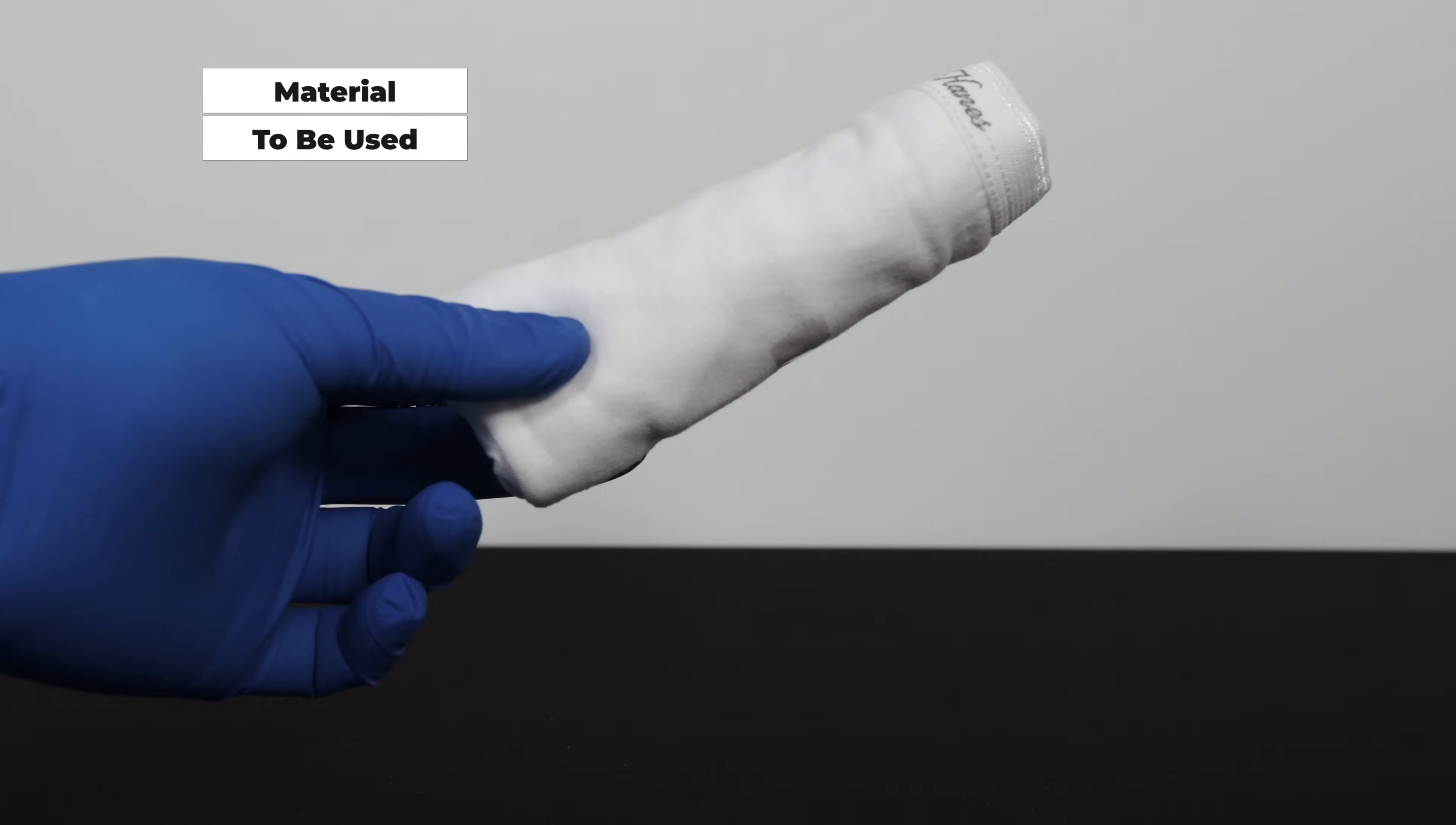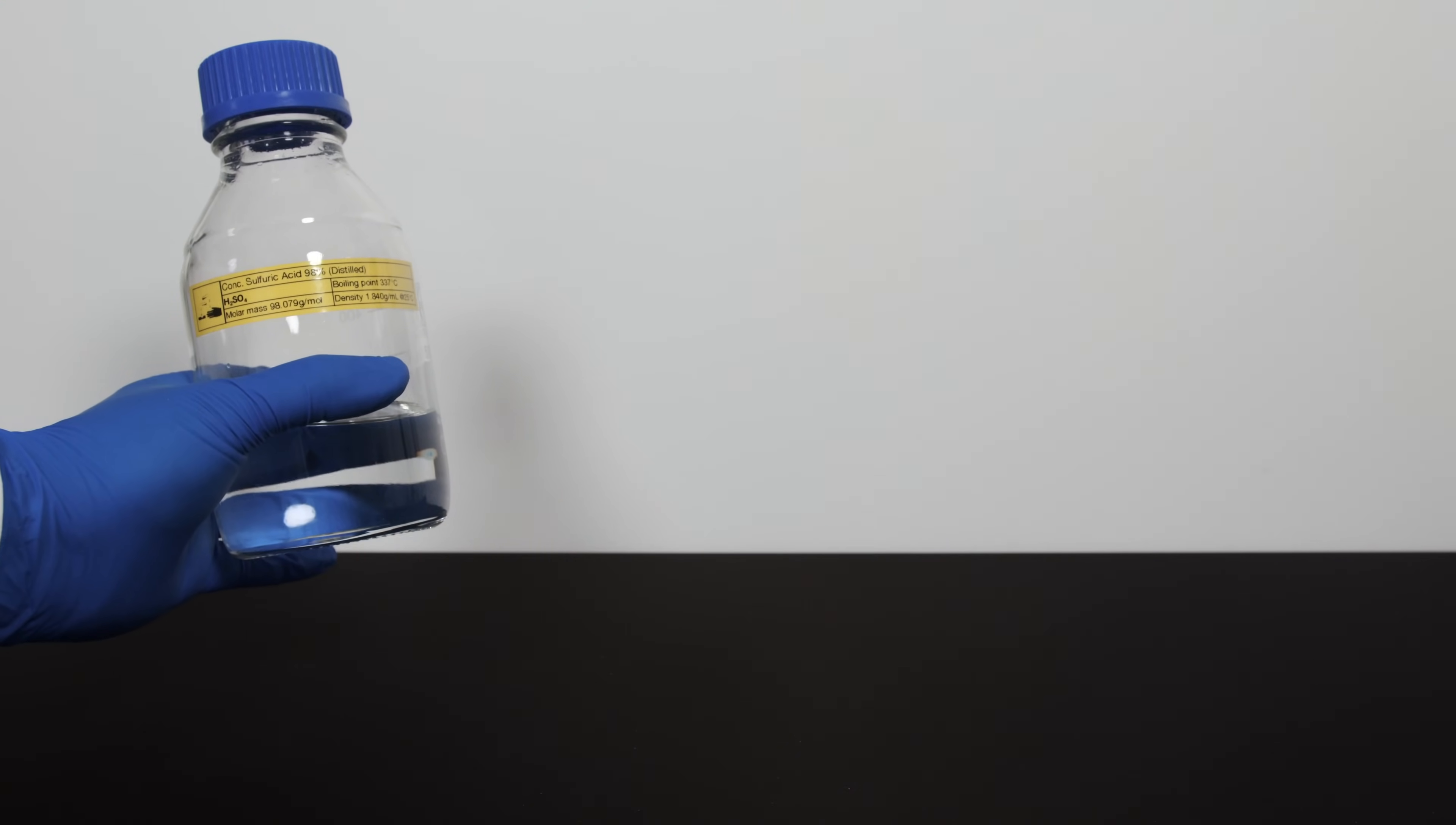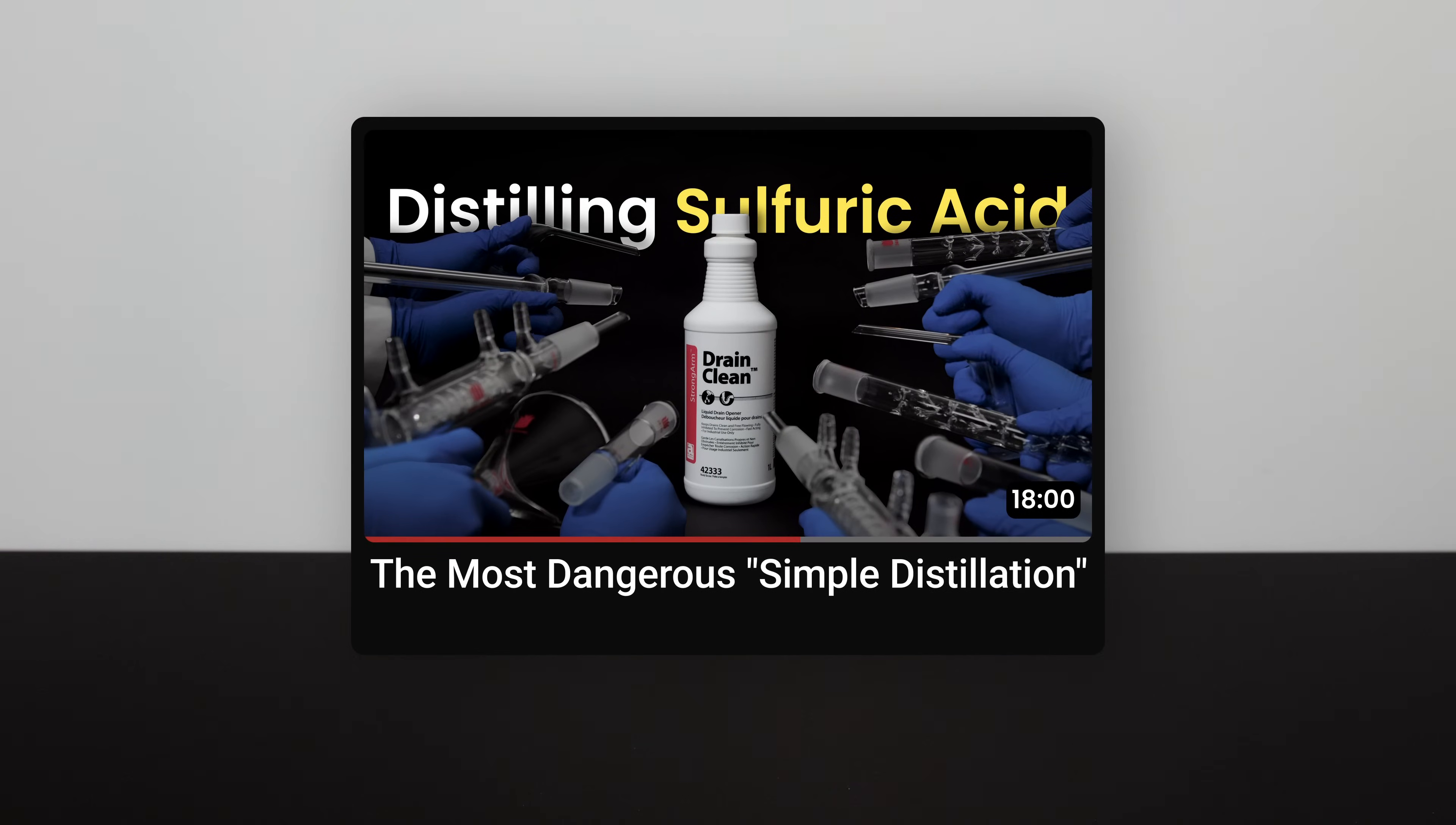So let me first go over the material needed for this experiment. Firstly, you will need a pair of panties. If you have a wife, kindly borrow it from her, or if you don't have one, just buy one online. I mean, buy a pair of panties, not a wife. Secondly, you will need 98% sulfuric acid. While a drain opener could work, the result may not be as good. We have distilled 98% sulfuric acid from drain opener in a previous video, so anyone who needs it can refer to that video.